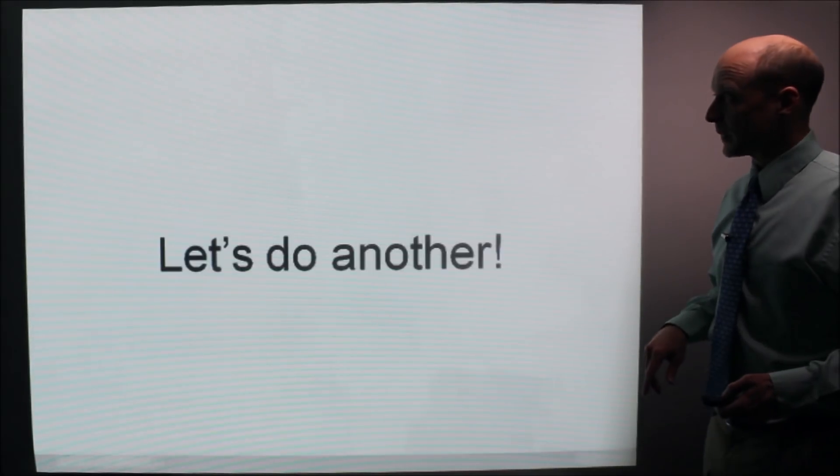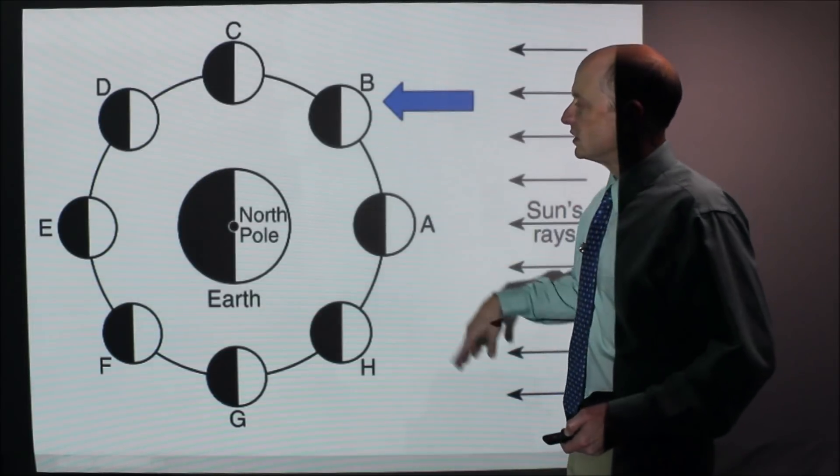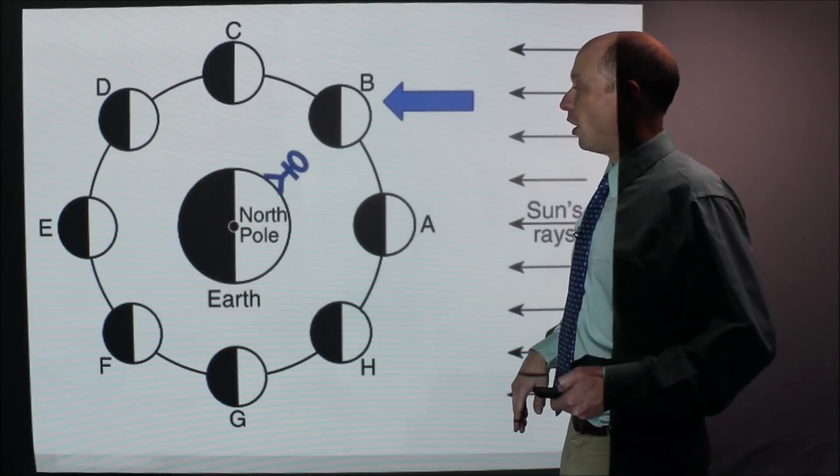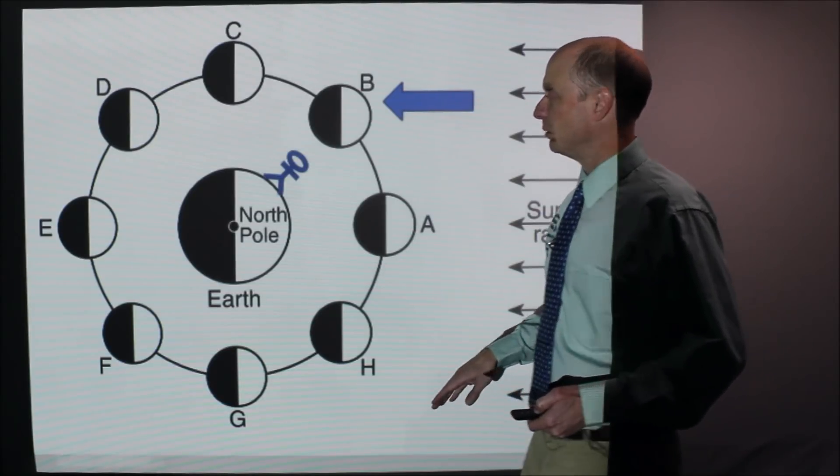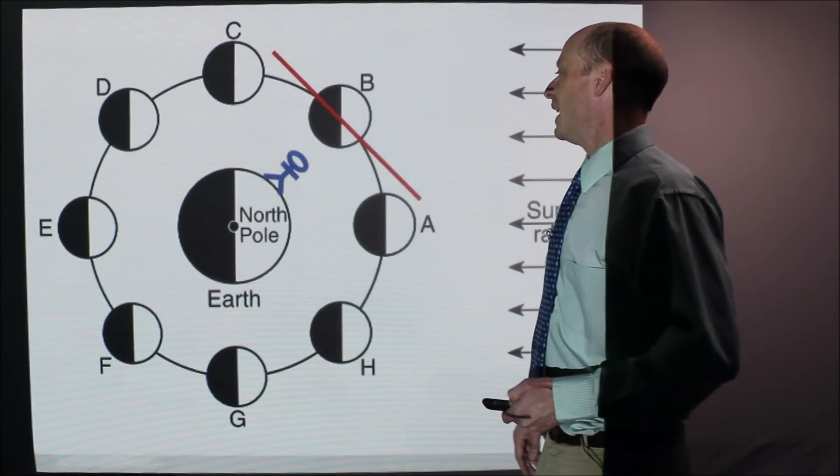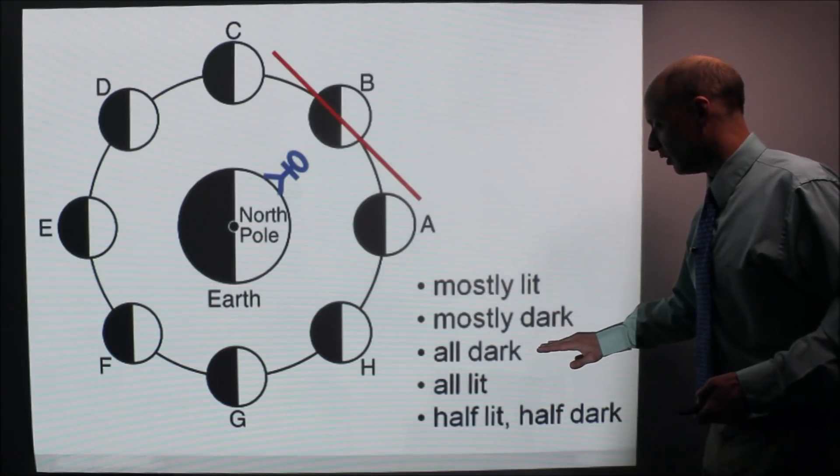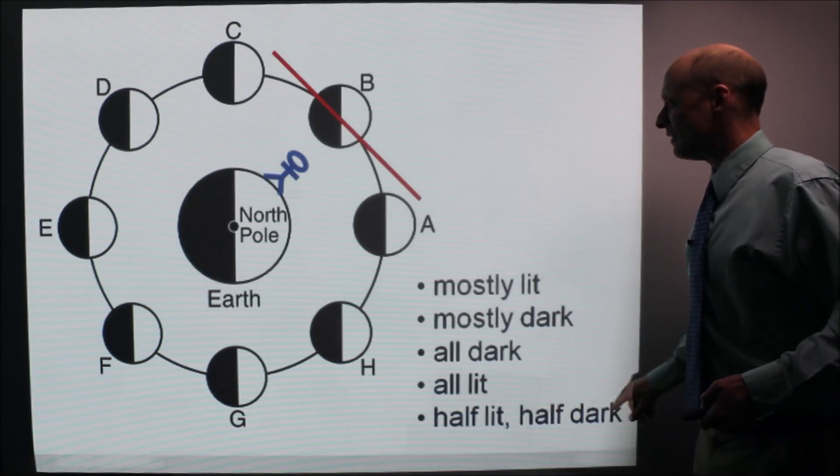Let's do another one. Let's say it's at B. Same basic idea. You're going to draw in the person there, directly below it. Again, you're looking into the board, and you're going to draw in the line that designates what they see. And then, you're going to say, is it mostly lit, mostly dark, all dark, all lit, or half and half?